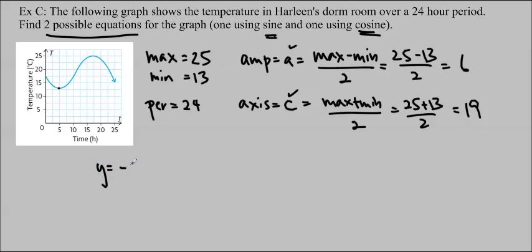So I'm going to say that y is equal to negative, amplitude is 6 cos, and then my K is going to be 2 pi over 24, so 2 pi over the period, which is pi over 12. So I'll write that in. Pi over 12 times x minus 5 because I'm going in the right direction plus my axis, 19.